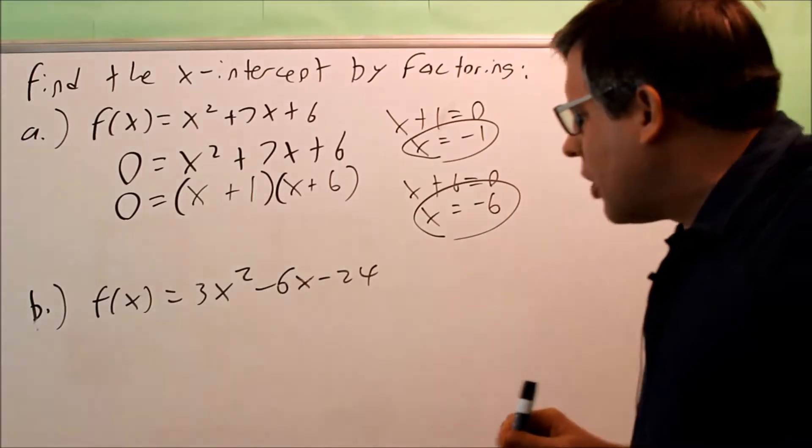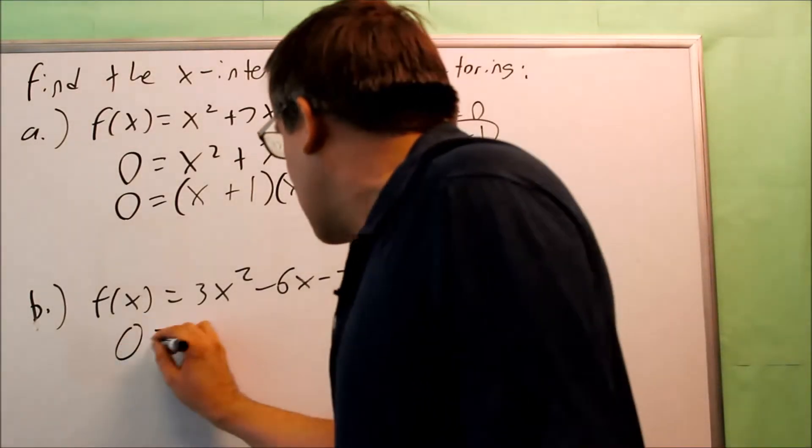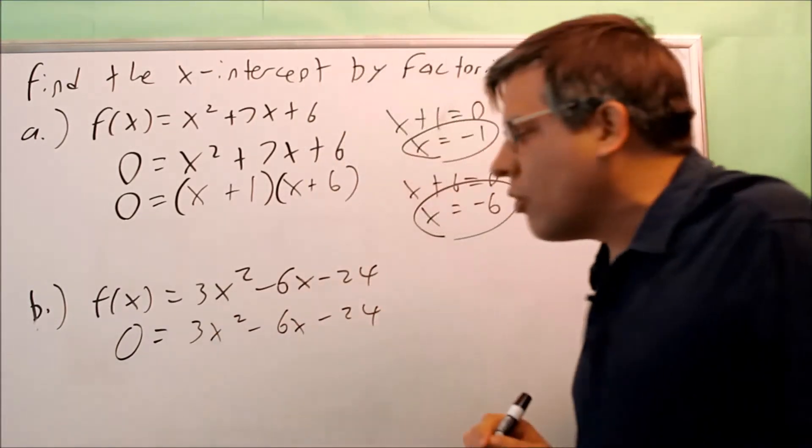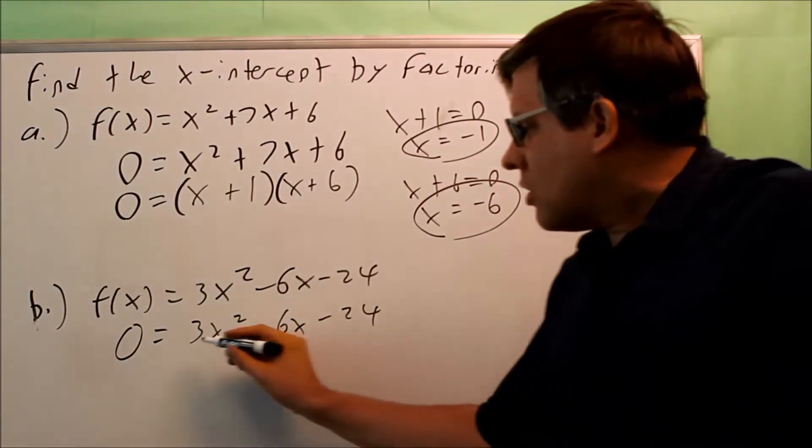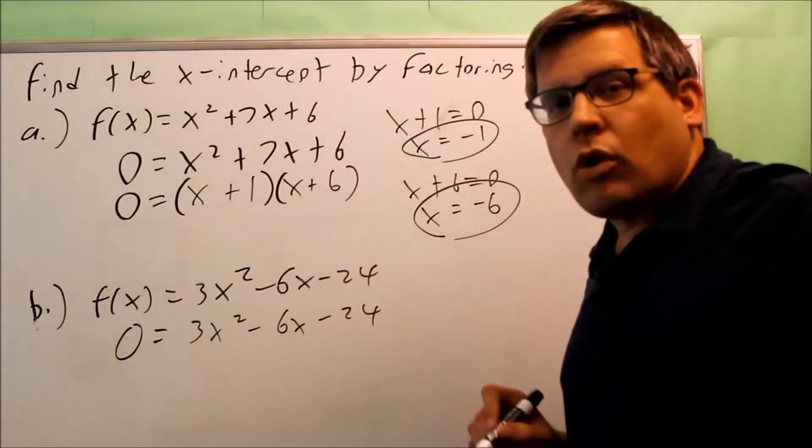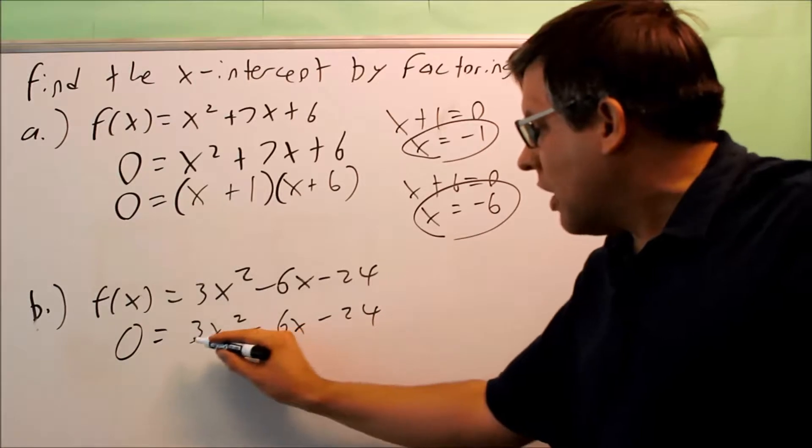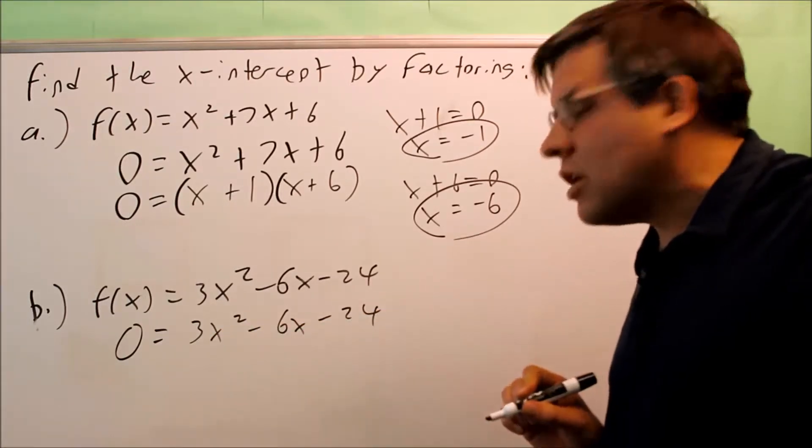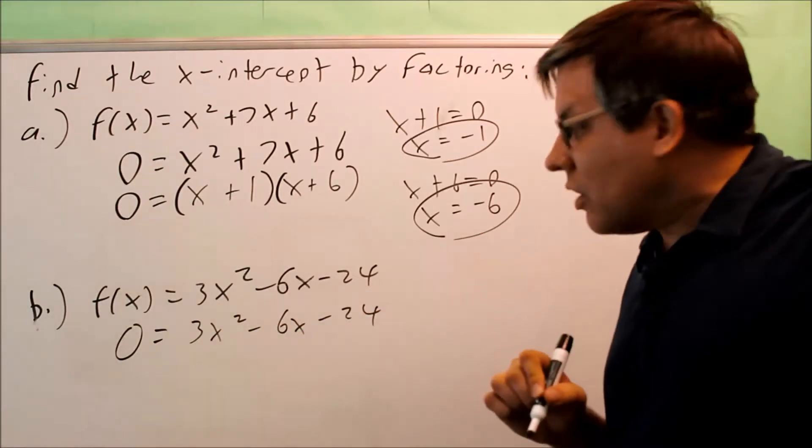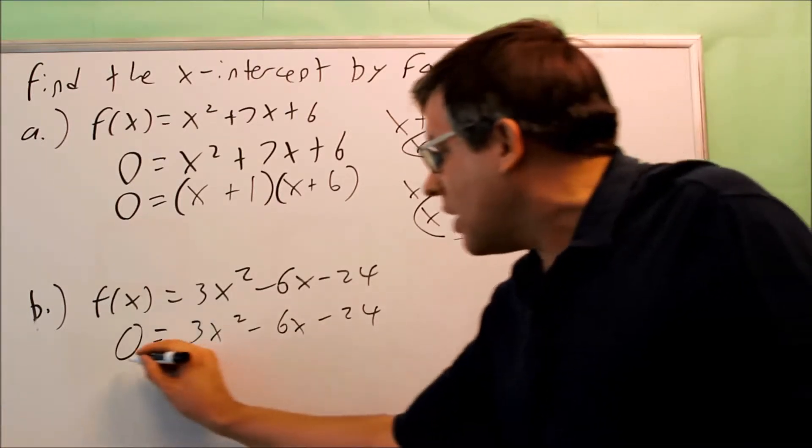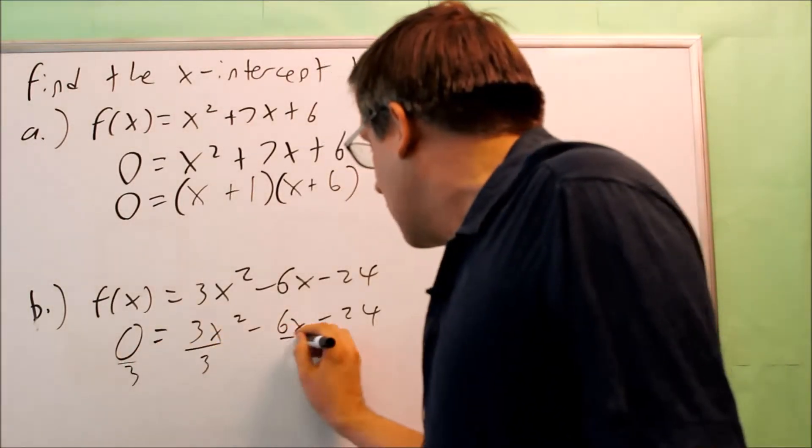So now let's do part b. So for part b, again, you're starting out by putting in a 0 for the y term. And what you notice here is there's not a 1 in front of the x squared. However, if you look at everything else, everything else is actually divisible by 3. So what would be easier to do on this one to get a 1 in front of the x squared is you want to divide both sides by 3.